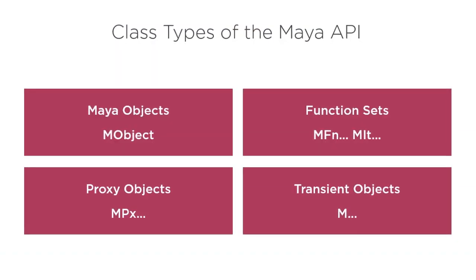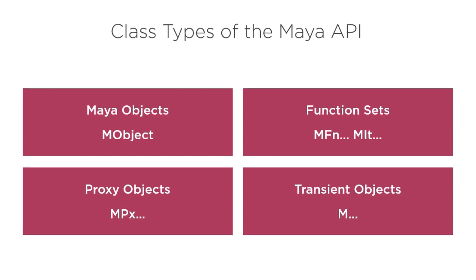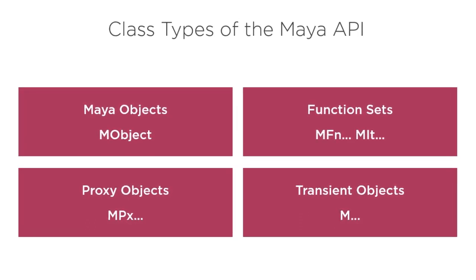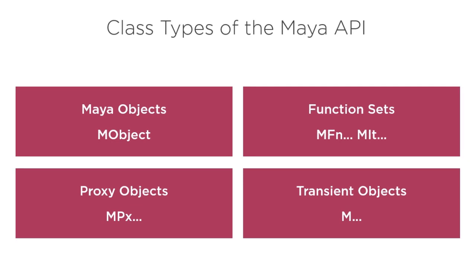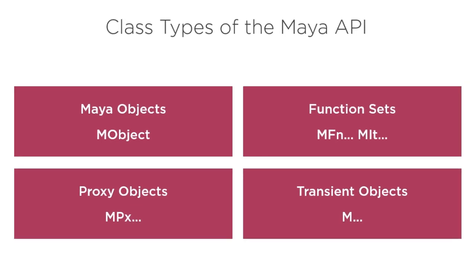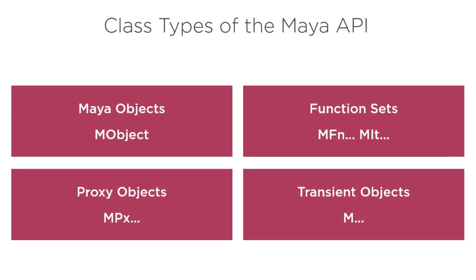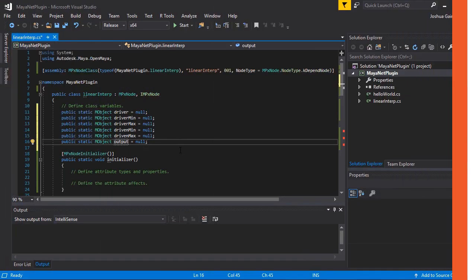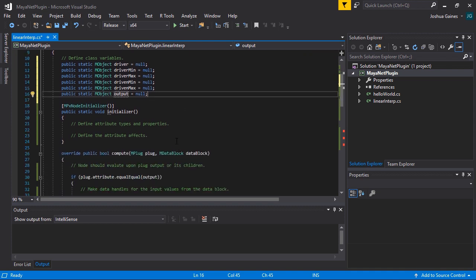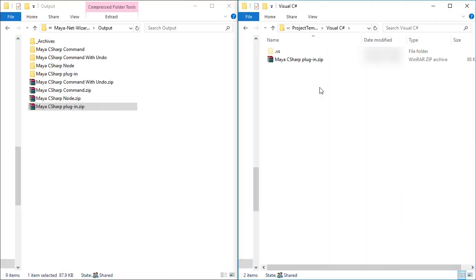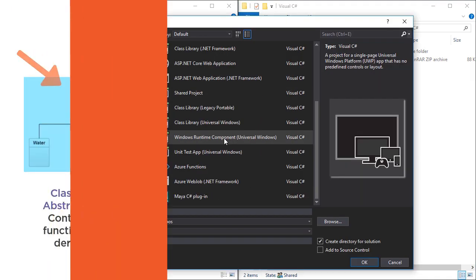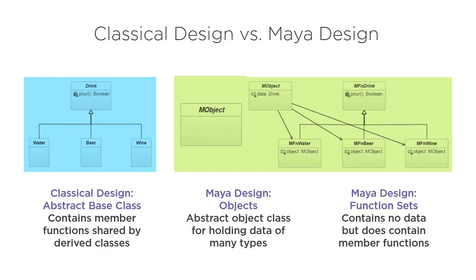Have you ever wanted to create a custom plugin for Maya? Well look no further. Introduction to C-Sharp Plugin Development for Maya 2019 provides you with in-depth knowledge on using Maya's .NET API and teaches you how to build your own plugins. This course also provides you step-by-step instructions for setting up Visual Studio and the basics of developing with the Maya API.